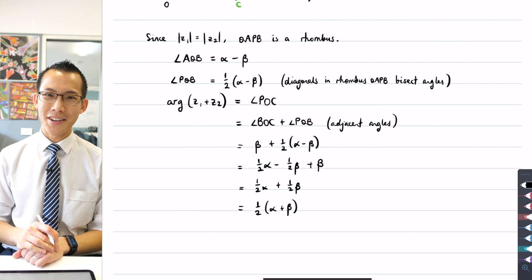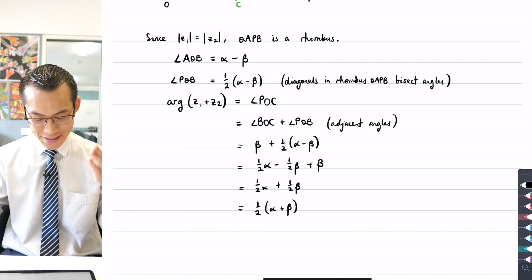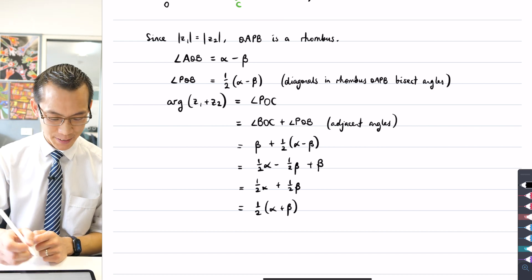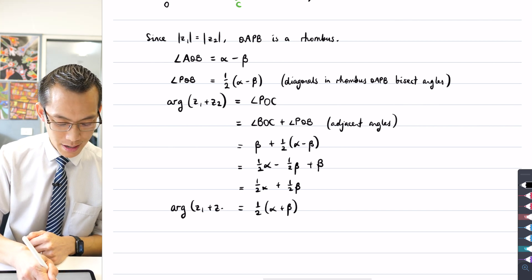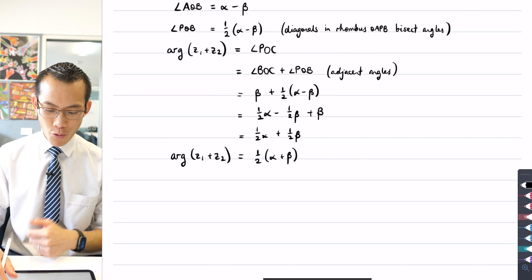Now, I wonder if this is the point at which everything has clicked for you. This is the argument of Z1 plus Z2. So remember where I'm trying to go.